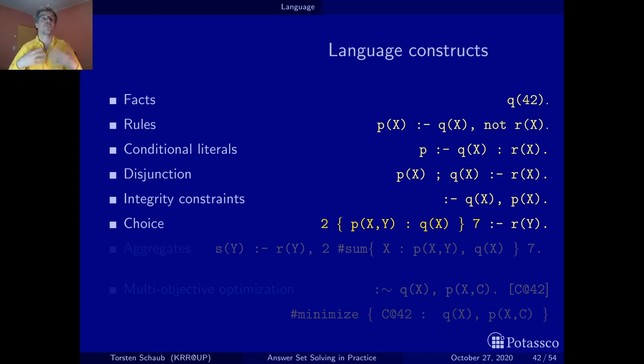This is something that is very useful. It's a non-deterministic concept and a very nice application is for configuration. Imagine that you want to configure a computer and you say you want at least two hard disks with certain conditions. And at most, seven hard disks. Or you may even want to talk about the price and constrain that. If you want to talk about the price, choice rules are not exactly what you want. There you want to use aggregates, which we discuss next.